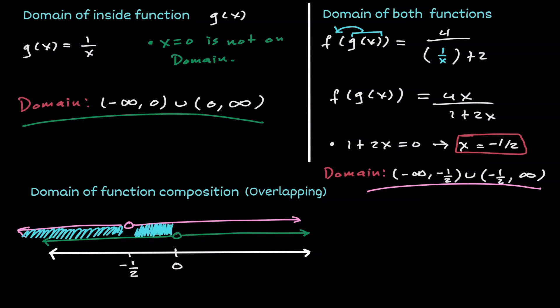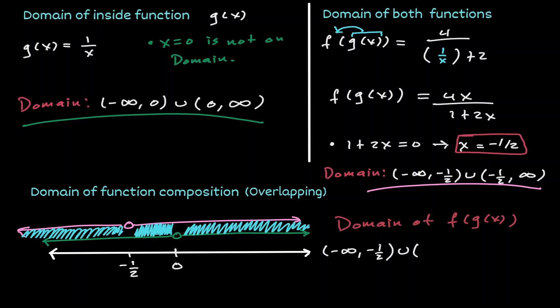The pink domain excludes negative 1/2 while the green domain includes it — they are not overlapping there. They also overlap on the interval from negative 1/2 to 0. At 0, the green domain excludes it while pink includes it — not overlapping. Then continuing right of 0, they overlap for all values. These three overlapping regions form the domain of the composition: negative infinity to negative 1/2, union negative 1/2 to 0, union 0 to positive infinity.